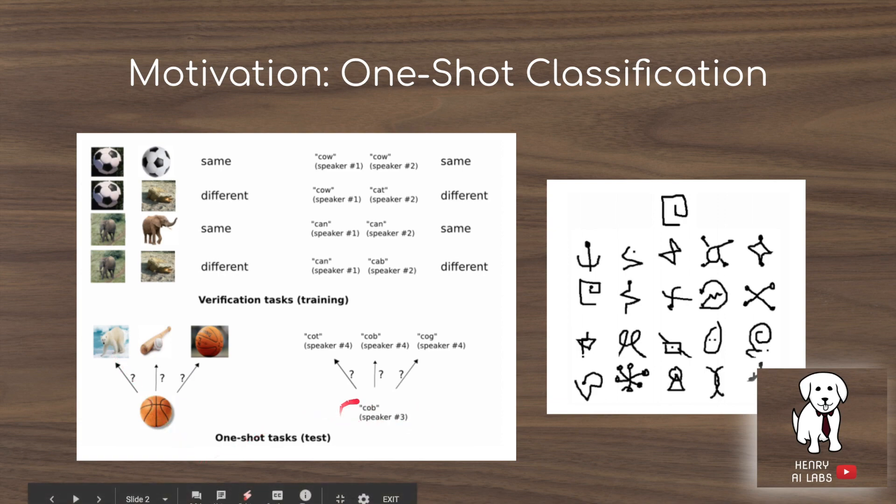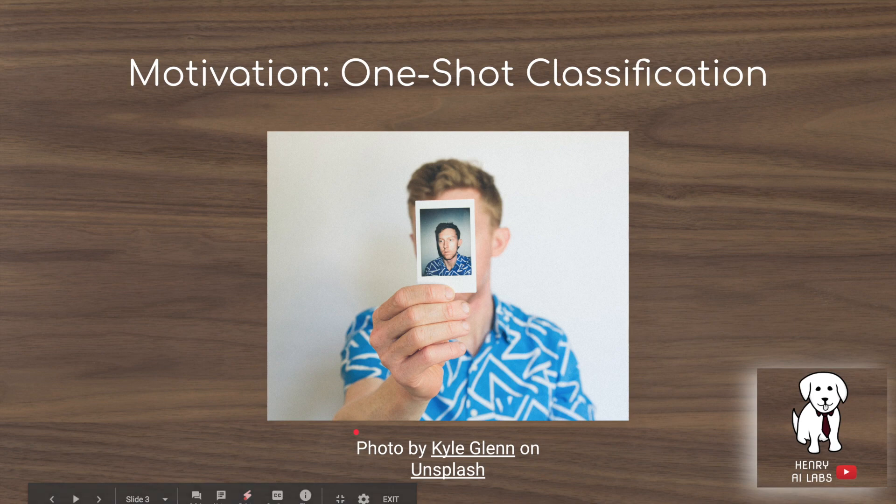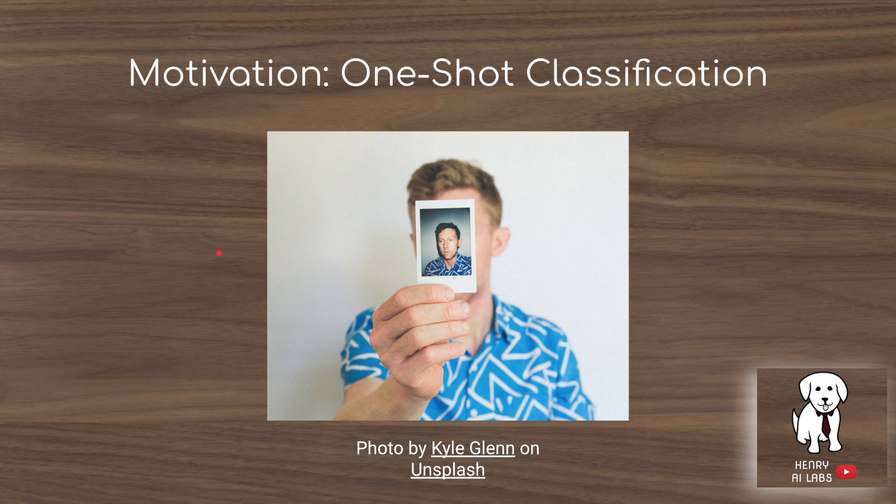This is also true for speech recognition and other areas of deep learning. One of the biggest applications of one-shot classification in industry is facial recognition. For example, say you go to the gym and take your picture. The classification model might recognize your gym membership by your face, but only has one labeled sample to learn your identity from.